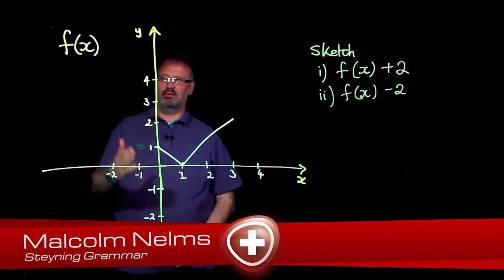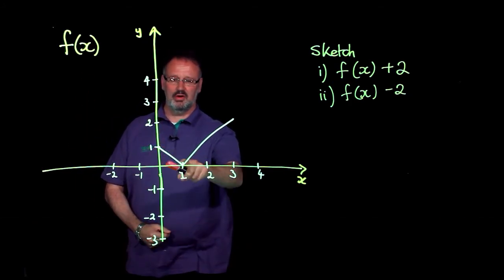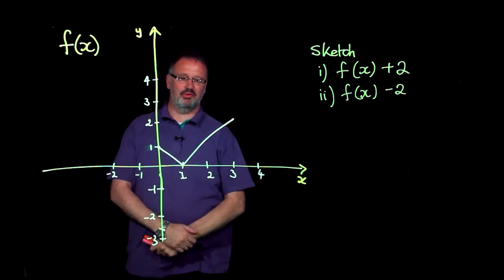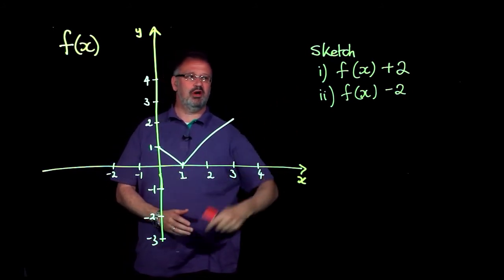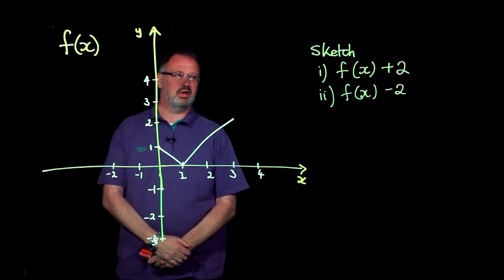We have been given this graph of f(x), here as shown from 1 down and across and then up to 3, 2. And we're being asked to sketch the graph of f(x) plus 2 and secondly the graph of f(x) minus 2.